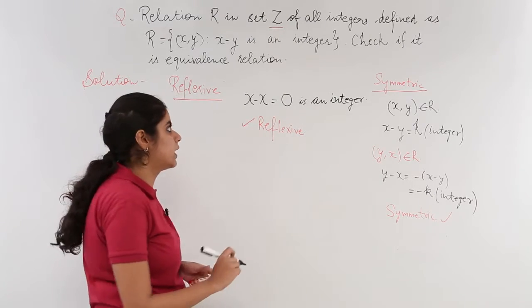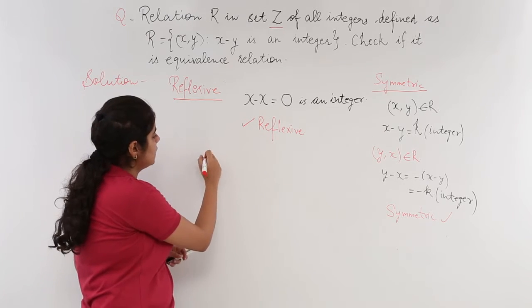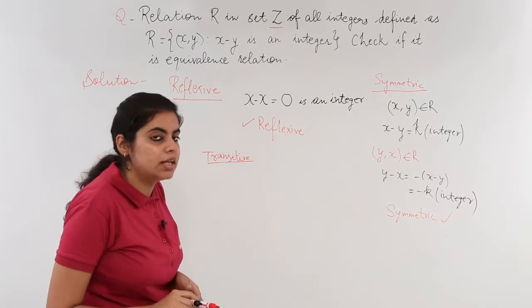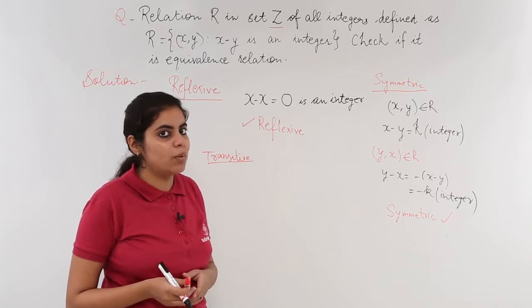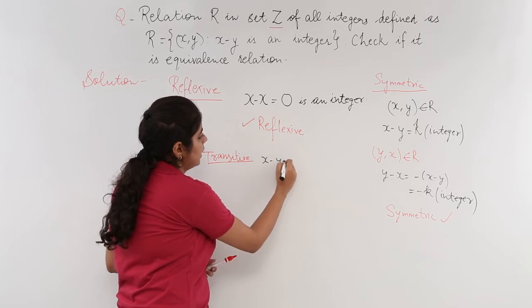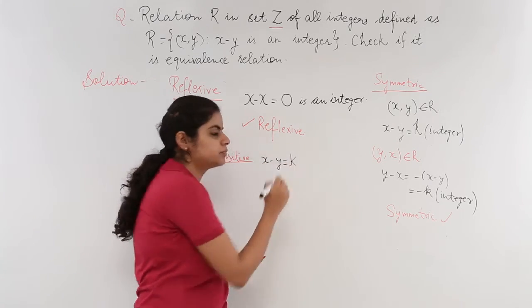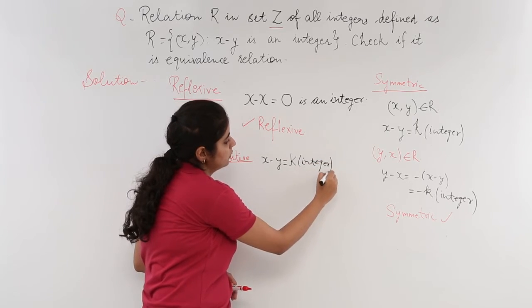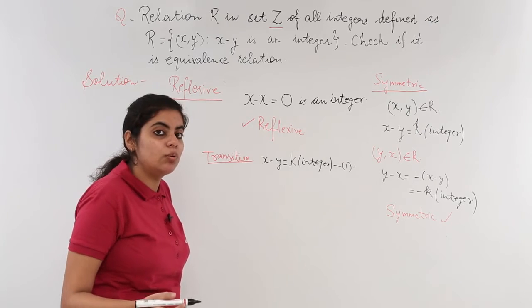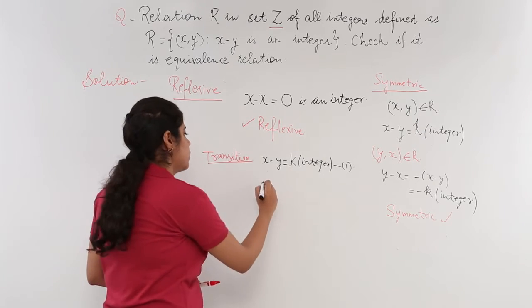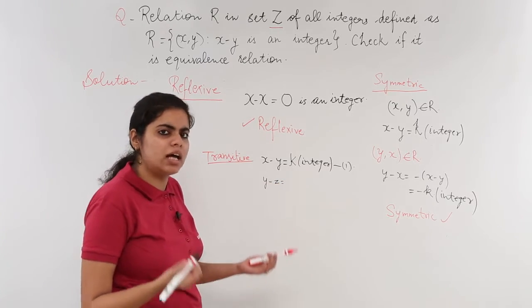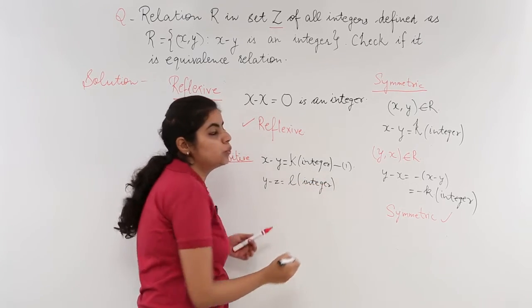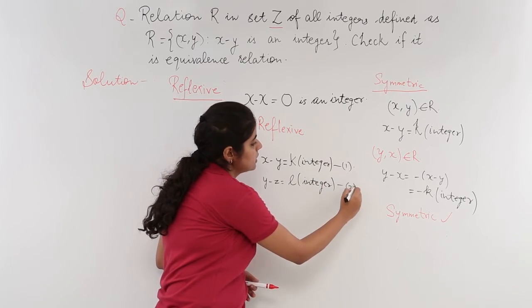The third and final property to check is transitivity. For transitivity, we take three pairs. Let X minus Y equal K, an integer — equation one. Now take a second pair Y and Z, where Y minus Z equals L, another integer — equation two. This is an assumption to prove whether the relation is transitive or not.